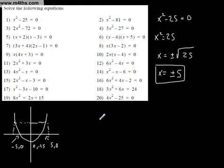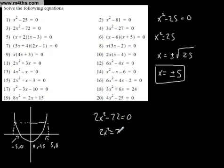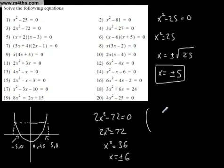Let's look at 2x² - 72 = 0. We've got no x term, which means we don't have to factor it. All we've got to do is add 72 to both sides: 2x² = 72. Divide both sides by 2: x² = 36. And x = ±√36 = ±6. This has simply got a scale factor stretch of 2 parallel to the y-axis and has been translated by a vector of (0, -72), so it's been dropped down by 72 units.